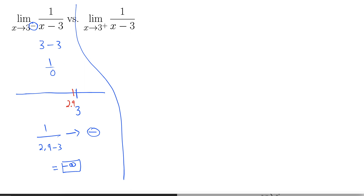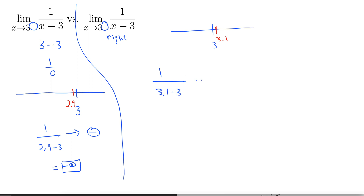Now let's look as x approaches 3 from the right — the positive direction, coming in from the right. Again, there's nothing that cancels here; plugging in 3 gives 0 in the denominator, so we're looking at some kind of infinity. We examine the number line and imagine a point really close to 3 from the right — say, 3.1, or even better, 3.00001. So we have 1 over 3.1 minus 3. I just need to know if it's positive or negative — and that's going to be positive. So this limit must be positive infinity.